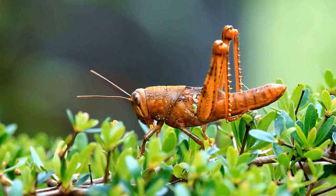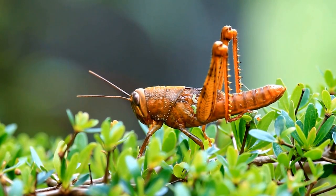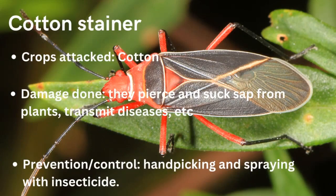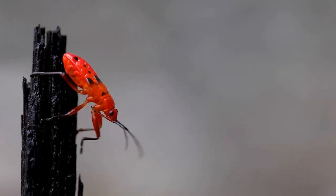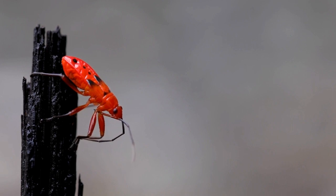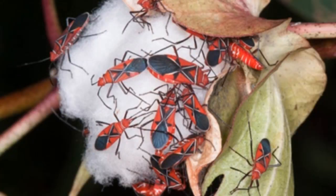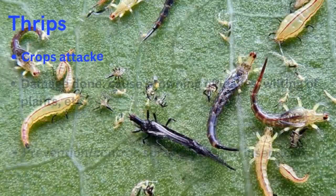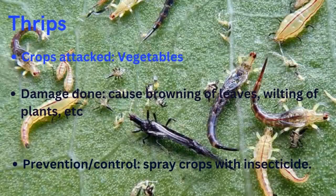The variegated grasshopper is called that name because it has various colors, unlike other grasshoppers that have only one color. The next pest is the cotton stainer. The cotton stainer usually attacks cotton and its damage is that it pierces and sucks from the plant. It is an example of a piercing and sucking insect crop pest. In the process of piercing and sucking, it releases toxic saliva, causing transmission of disease, reduction in the quality of cotton bolls, and leaf distortion. Control is by hand picking and spraying with insecticide.